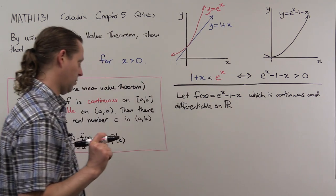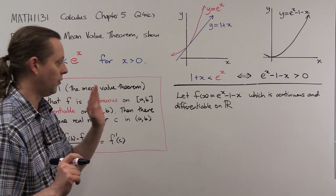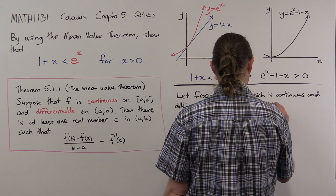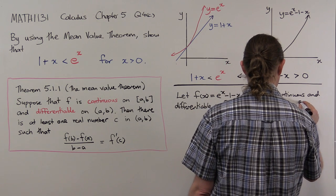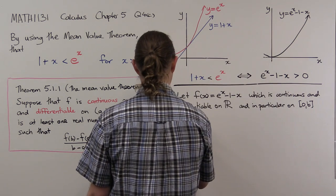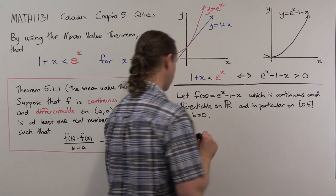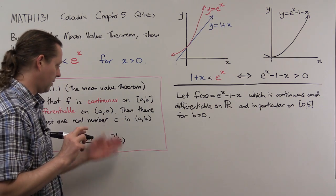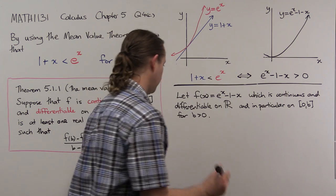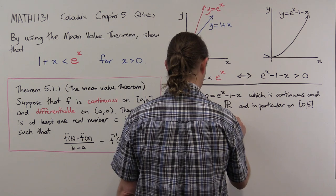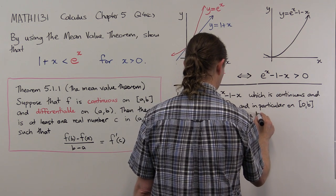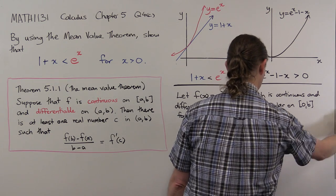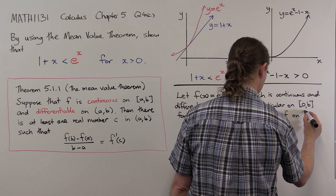We want to work on a particular interval. I'm going to choose an interval from 0 up to some point b, where b is a positive number — so essentially taking a equals 0 in the mean value theorem. We can apply the mean value theorem because f is differentiable and continuous where we need it to be. So we're applying the mean value theorem to f on the interval [0, b].